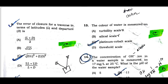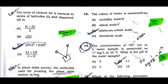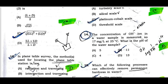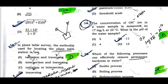Question number thirteen: The color of water is measured on the platinum cobalt scale. Question number fourteen: The concentration of OH minus ions in a water sample is measured at 17 milligrams per liter at 25 degrees centigrade. What is the pH of the water sample? The pH value will be 11.